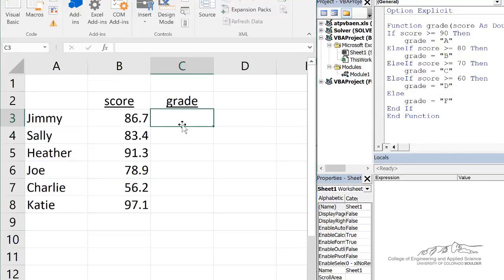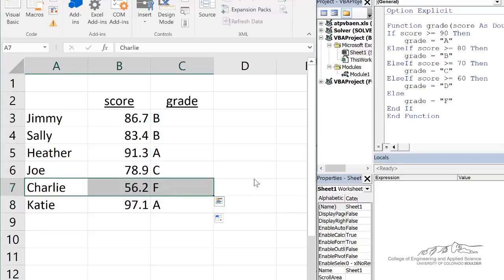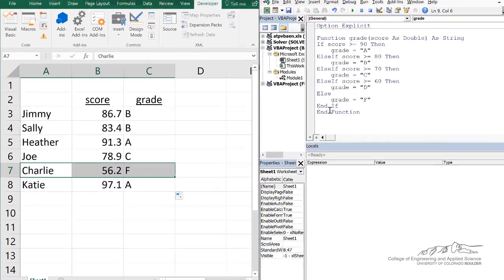Let's go ahead and run this. I'm in Excel, I'm going to type in the function, referencing the score, and when I press enter, we get a grade of B. And now I can just easily drag this down, and I get all of my grades. Wow, I did pretty poorly.